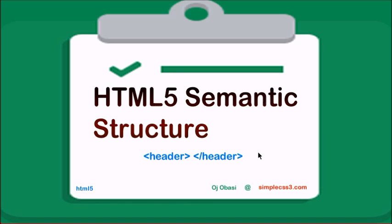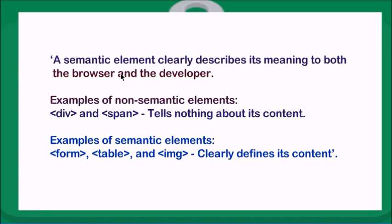In this tutorial, we'll be looking at the semantic structure of an HTML5 document. We'll look at the different semantic elements and first examine the definition of a semantic element. A semantic element clearly describes its meaning to both the browser and the developer. Examples of non-semantic elements are div and span — they tell nothing about the content they represent. Examples of semantic elements are form, table, and image — they clearly define what content they represent. For example, an image tag represents an image in a web document.